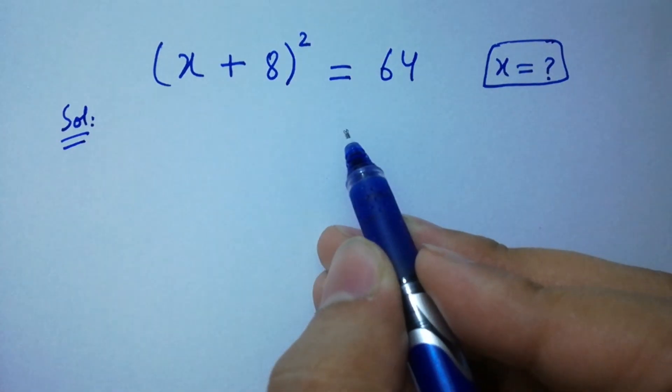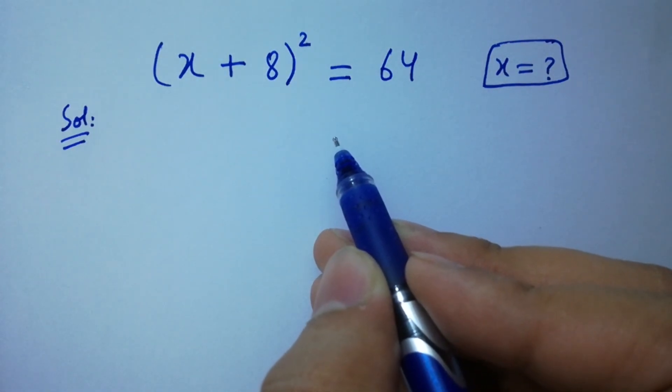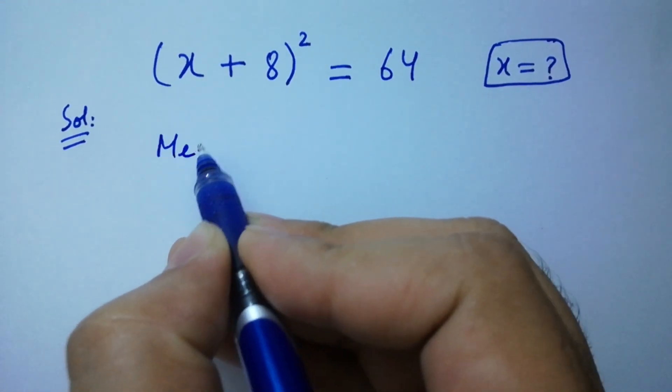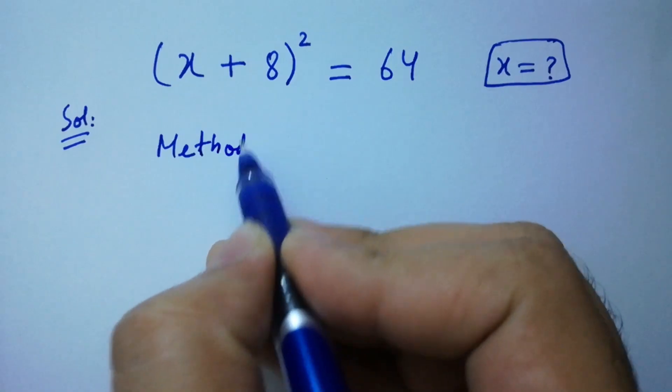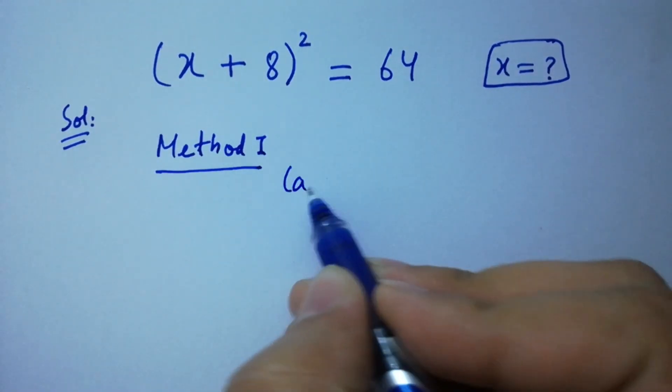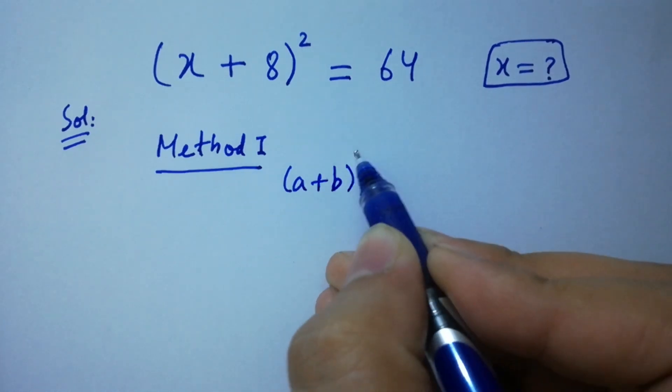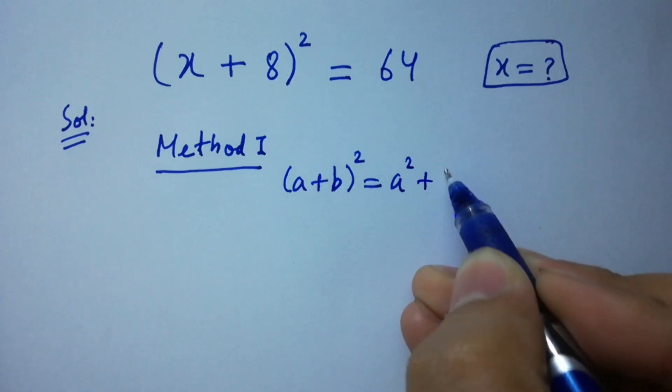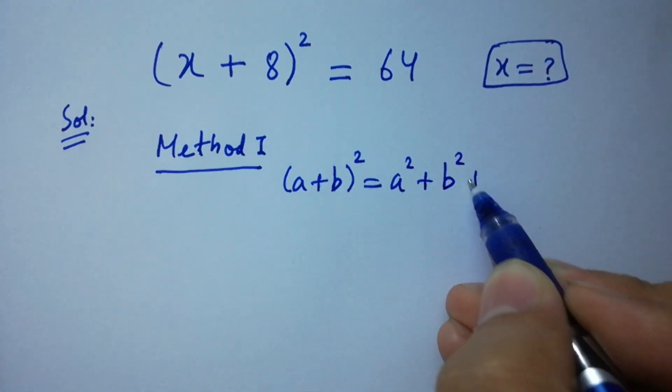This question can be solved by two methods. Method 1 is (a + b)² which is equal to a² + b² + 2ab.